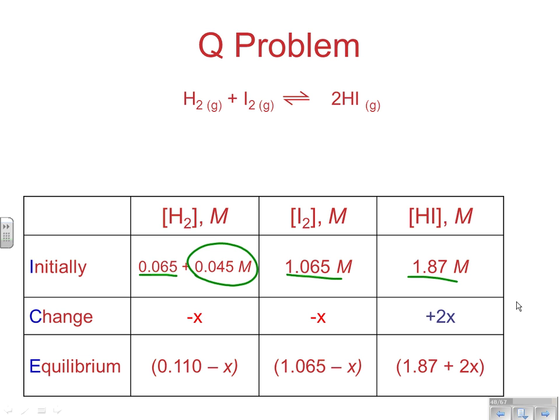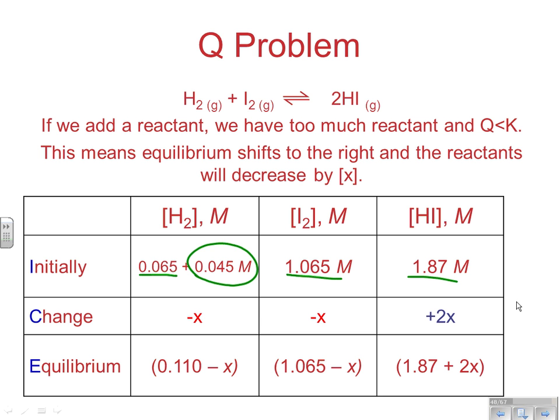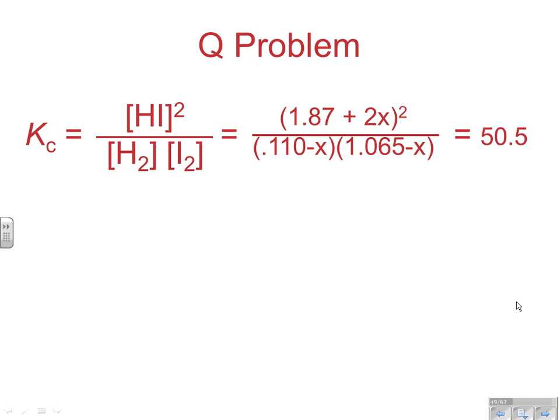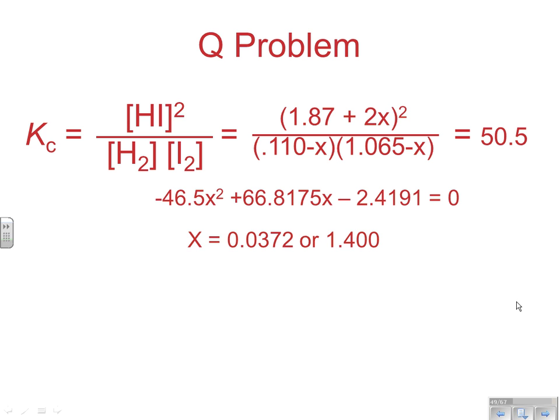Now since we haven't changed temperature, K hasn't changed either. So we can set up our equation again. And remember, I just went through all this. Q was less than K. So that means equilibrium is going to shift to the right, and that means we're going to decrease by X. And when we plug those things into our same old expression, remember, equals the same thing it was before, 50.5. Now we get this form of the quadratic equation. Just like before, if you plug that into your quadratic solver, it'll return your values. In this case, we get 0.0372 or 1.40.